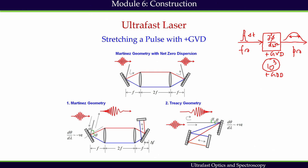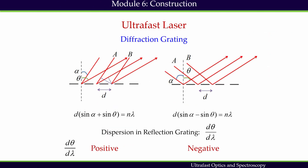We have shown two different arrangements: Martínez geometry and Treacy geometry. Both use grating pairs to introduce chirp or broaden the pulse. Before discussing them, we need to go over the grating equation and understand the properties of a grating. A diffraction grating is an optical element that possesses an arrangement of a large number of parallel, equidistant, and closely spaced slits of the same width placed side by side.